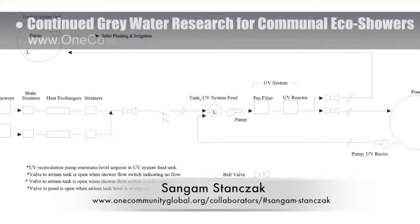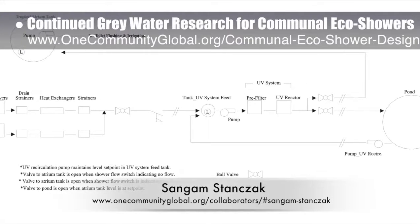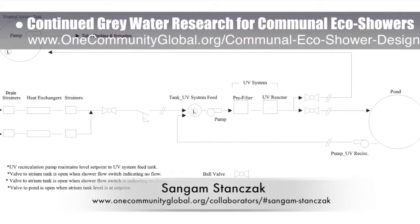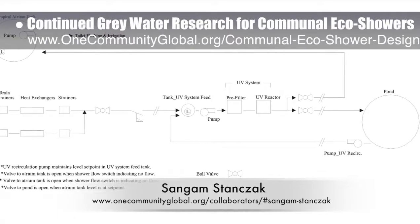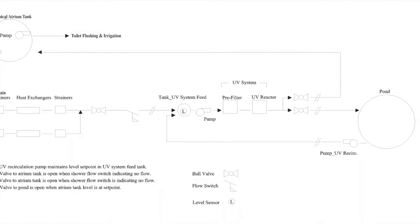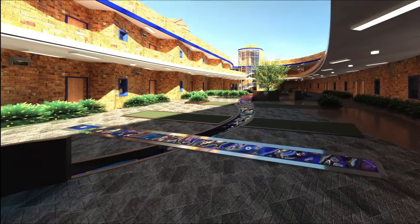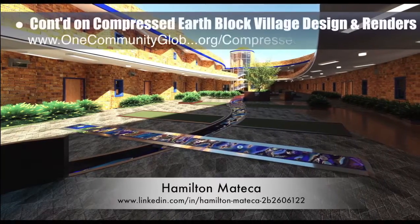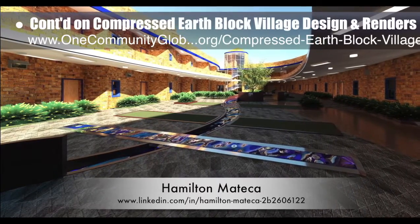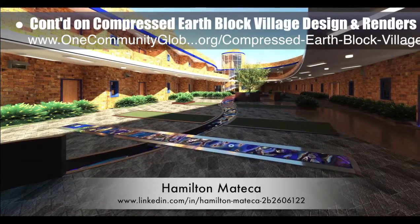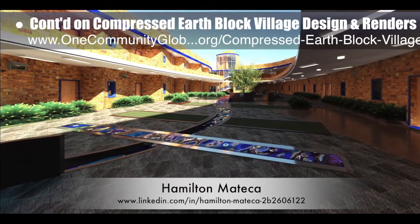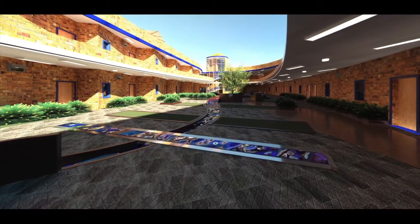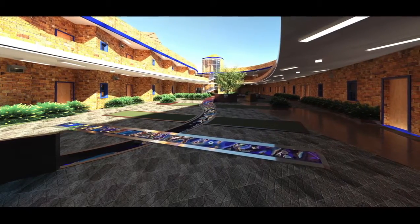Sun Gum also created an updated design schematic shown here for the complete gray water system. Hamilton Matiga, AutoCAD and Revit drafter and designer, finished his 66th week helping with the compressed earth block village design and render details. This week's focus was work leading to an additional final render of the zone 17 central play and recreation area, which can also now be viewed on the website.